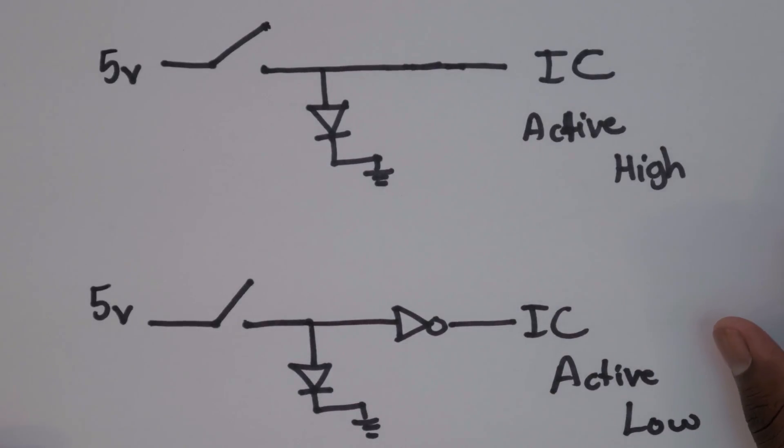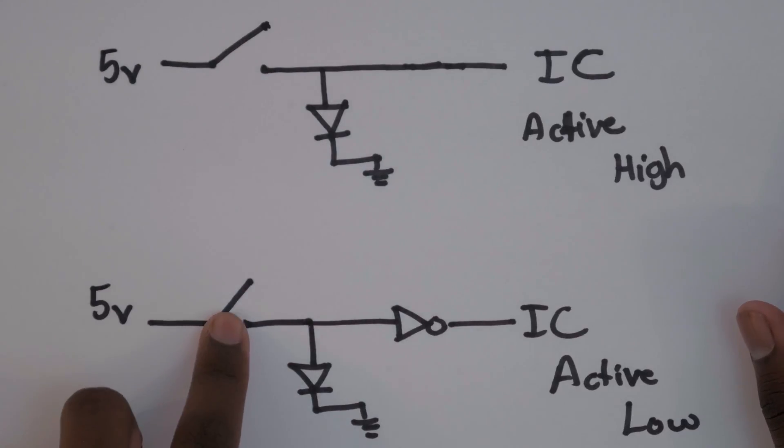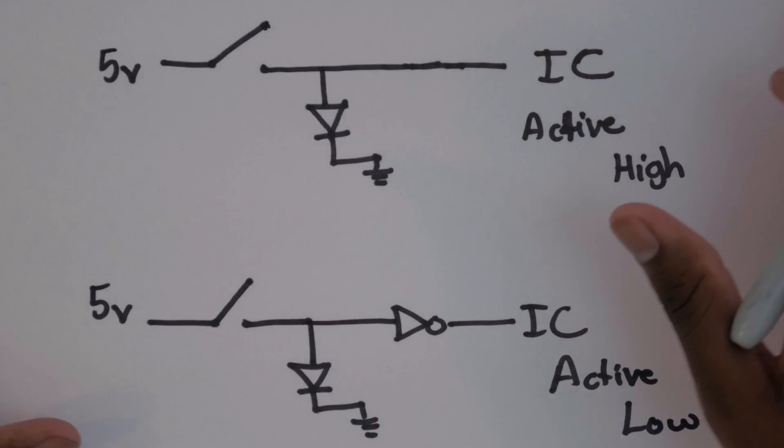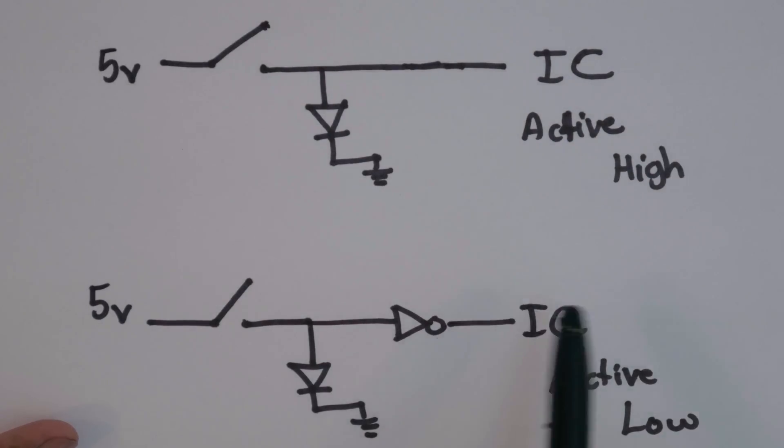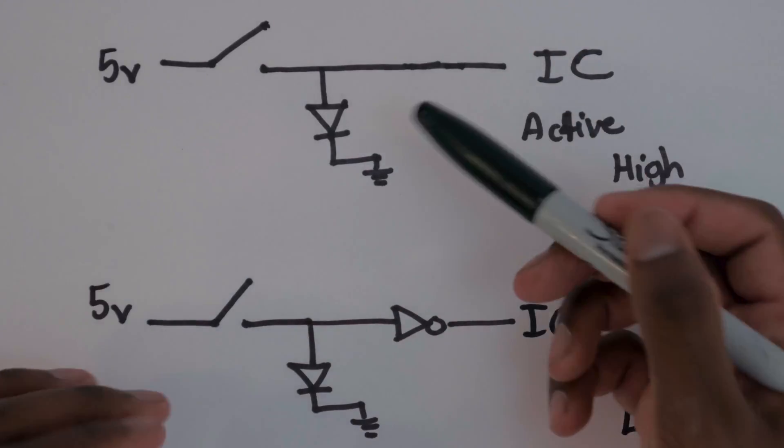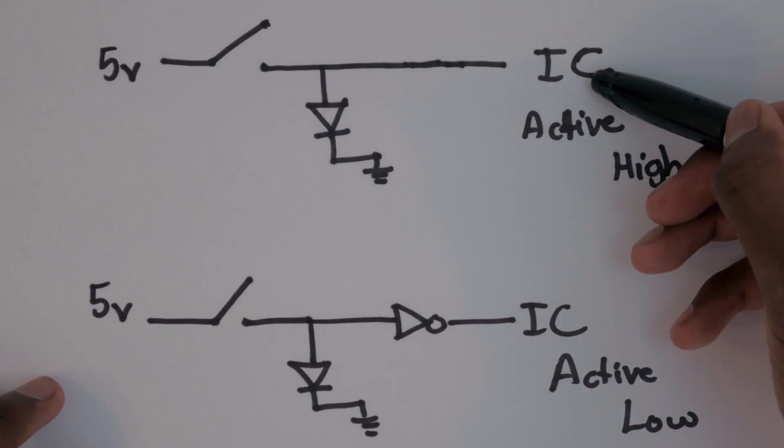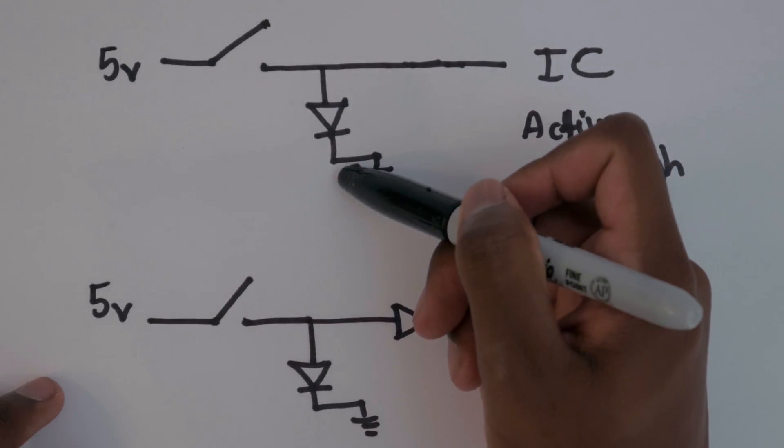This is good because all we have to worry about is whether we want this signal to be on or not, which is by closing the switch or opening the switch in exactly the same way, no matter whether the IC is active high or active low. By predetermining whether these ICs are active high or active lows, we can place the NOT gate before and then just have everything work exactly the same, which is going to be perfect. So no matter what, if the LED is on, that means that the IC is in its active state.